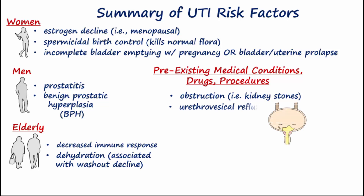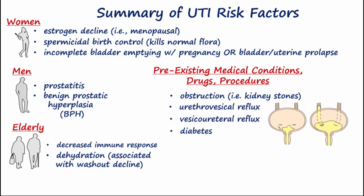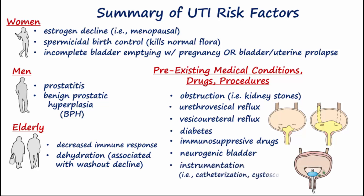In summary: reflux causes urine to flow the wrong direction; diabetes increases glucose in the urine, giving pathogenic organisms an additional food source; neurogenic bladder doesn't allow the bladder to empty properly, increasing residual urine which compromises washout; and instrumentation like catheterization allows bacteria to enter the urinary tract.